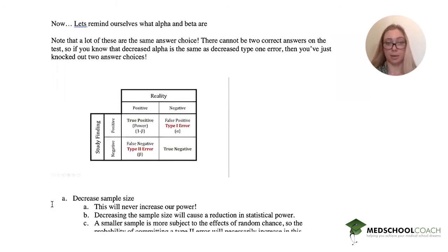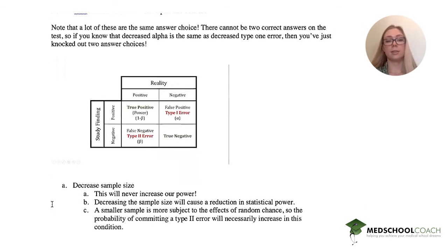So let's go through the options now. When we decrease our sample size, we will essentially never increase our power. Pretty much always decreasing a sample size causes more variability and more effects of random chance. So your probability of committing a type 2 error would increase.